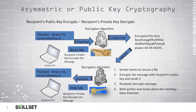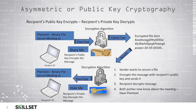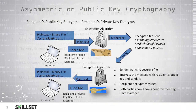When the recipient obtains the message, they can then use their private key — which only they have access to — to decrypt the contents of the message. Now they are aware of the secret meeting that the sender was trying to tell them about.